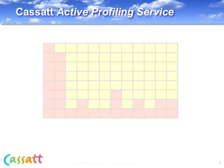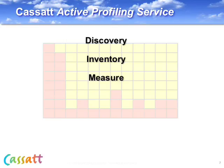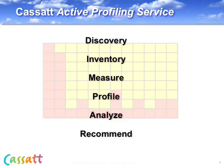To get that information, we've created something we call the Cassatt Active Profiling Service. This is a non-invasive service that discovers the applications and resources and figures out the mapping of applications to resources and how apps relate to each other. We measure utilization over time to profile what the patterns of usage really are, and we analyze this data for efficiency opportunities.